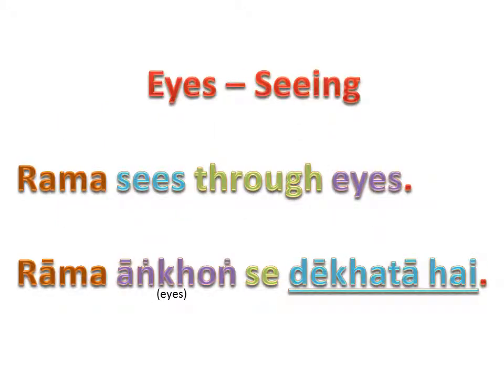Here is an example for eyes and its property seeing. Let's pronounce 'Ram sees through eyes' in Hindi. Repeat after me louder: Ram ankhon se dekhta hai. Ram ankhon se dekhta hai.